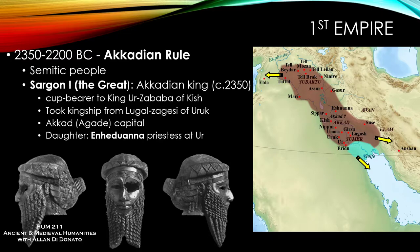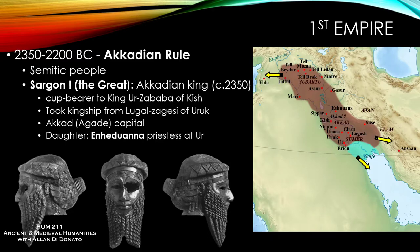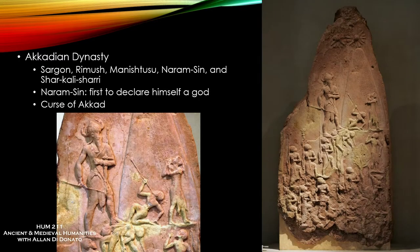Also important about Sargon would be some of his children — in particular his daughter Enheduanna, who was put into a position as high priestess at the city of Ur for the god Nana. The reason she's important is because she left behind some wonderful poetry, in particular a poem called The Exaltation of Inanna, the goddess of Uruk. One of your groups is going to be doing a presentation involving that poem, so you definitely want to focus a little bit on Enheduanna.